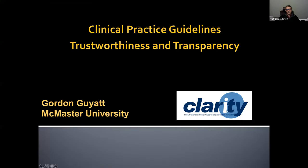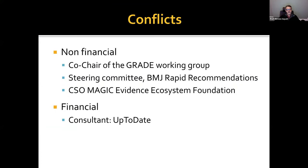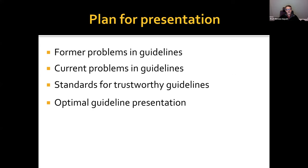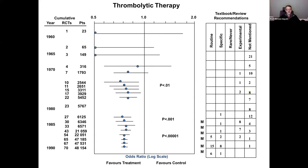I'm going to talk about clinical practice guidelines and particularly focus on issues of trustworthiness and transparency. I'll start with declaring my conflicts of interest. I'm the co-chair of the GRADE working group, and not coincidentally, you're going to hear quite a bit about GRADE. I am on the steering committee of the BMJ Rapid Recommendations, which are made in collaboration with the MAGIC Evidence Ecosystem Foundation, of which I'm the Chief Scientific Officer. My financial conflict of interest is that for many years I've spent a lot of time as a consultant with UpToDate. I'm going to talk about the long-standing problems in guidelines, the current problems in guidelines, and how those problems can be addressed by adopting standards for trustworthy guidelines and optimally presenting the guidelines.